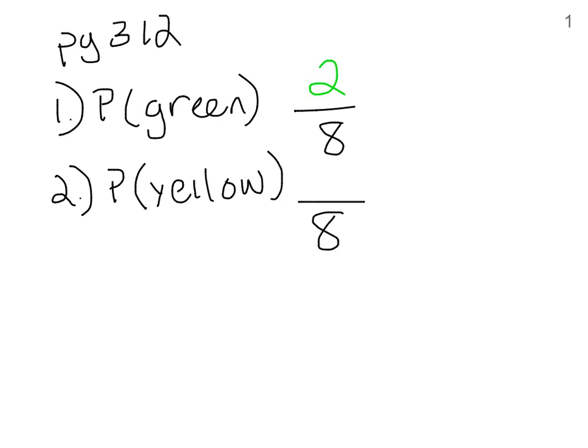What about yellow? How many yellows are there? How many chances that I can land on yellow? Well, I only have one. So then my chances would be one out of eight or one-eighth. See, it's very easy. Let's try number three.